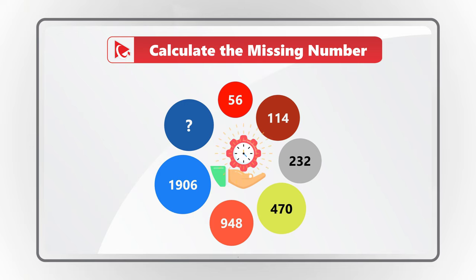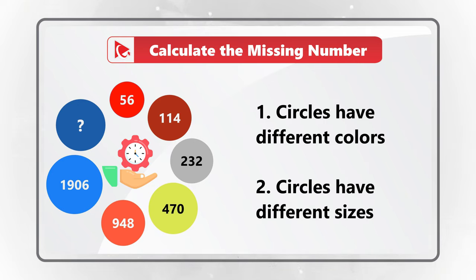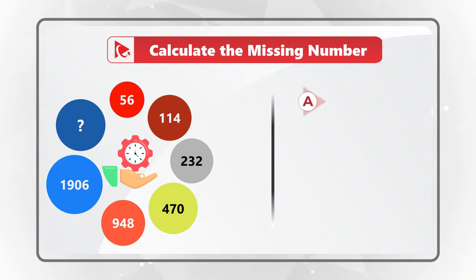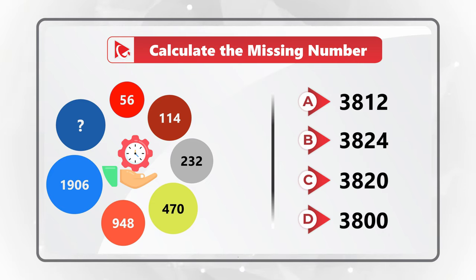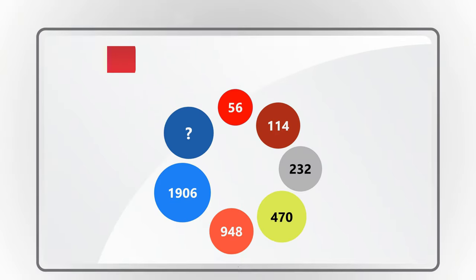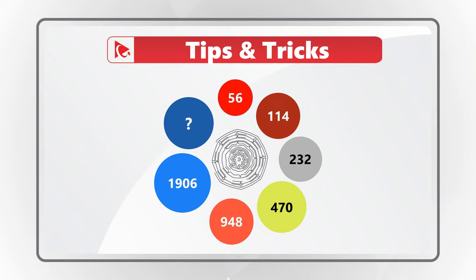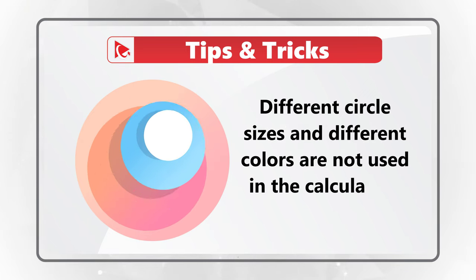What's interesting is that all circles have different colors and some have different sizes — but those details are just there to confuse you. The pattern is the key. The pattern here is: take the previous number, add the sequence position number, then multiply by two.